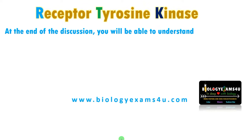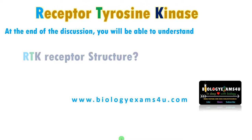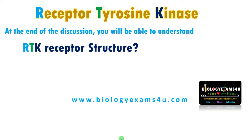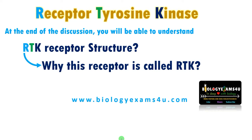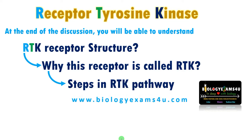Hi friends, hope you are fine. In the last video we discussed about three types of cell surface receptors. In this video let us understand receptor tyrosine kinase. At the end of this discussion you will be able to understand the structure of RTK, why this receptor is called as RTK, and steps in RTK pathway. Let's dive into the detail.